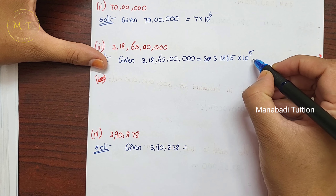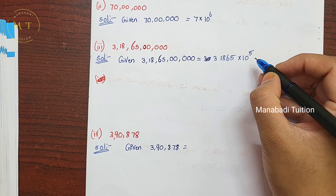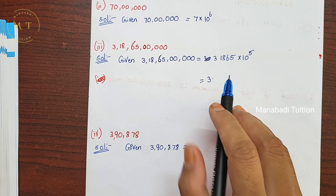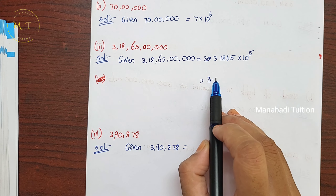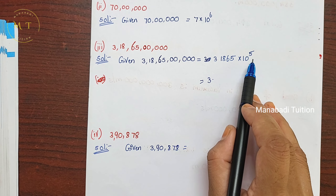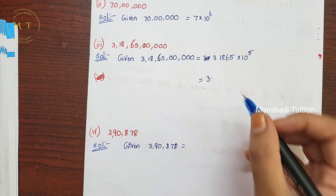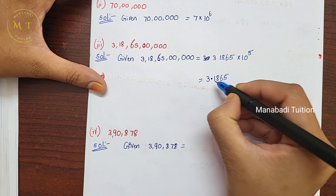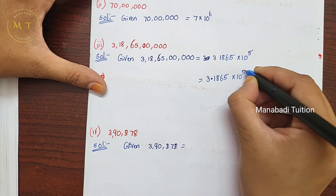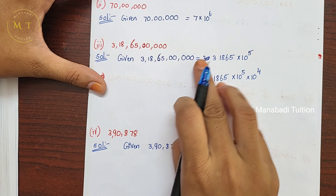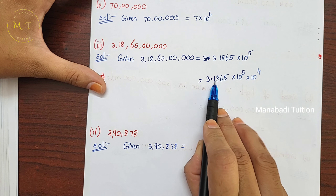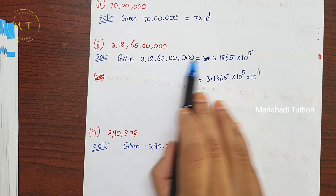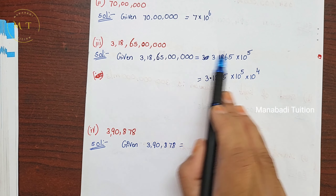Next, you have to note the numbers and check the back side answer. That is equal to 3 points. You have to write the normal number — 3.1865. Here you count 1, 2, 3, 4 digits. This is 10 power 5 into 10 power 4. Here you will get the number — 4 digits before the point.